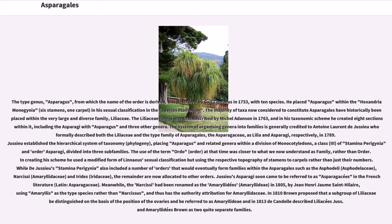The use of the term ordo (order) at that time was closer to what we now understand as family rather than order. In creating his scheme he used a modified form of Linnaeus's sexual classification, using the respective position of stamens to carpels rather than just their numbers. While de Jussieu's Stamina Perigenia also included orders that would eventually form families within the Asparagales — such as the Asphodeli (Asphodelaceae), Narcissi (Amaryllidaceae), and Irides (Iridaceae) — the remainder are now allocated to other orders. Jussieu's Asparagi soon came to be referred to as Asparagaceae.